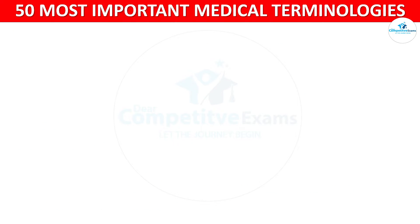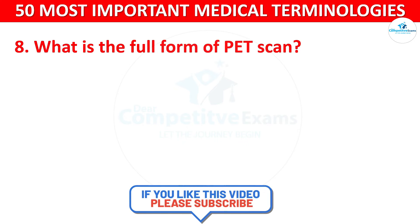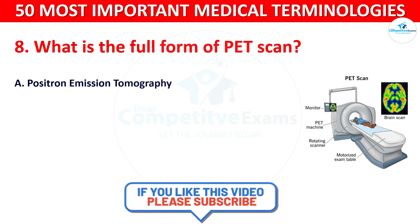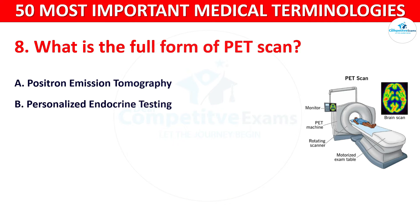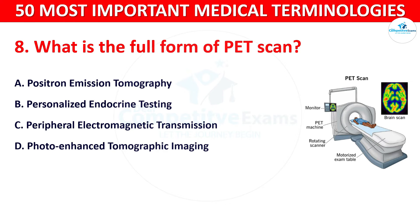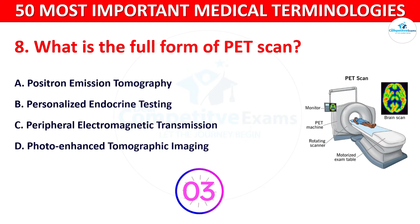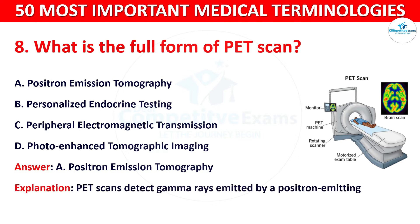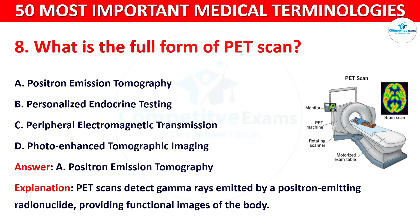Question number 8: What is the full form of PET scan? Your options are: A) Positron Emission Tomography, B) Personalized Endocrine Testing, C) Peripheral Electromagnetic Transmission, or D) Photo Enhanced Tomographic Imaging. The correct answer is Positron Emission Tomography. PET scan detects gamma rays emitted by a positron-emitting radionuclide, providing functional images of the body.